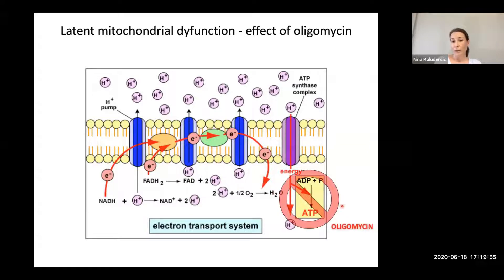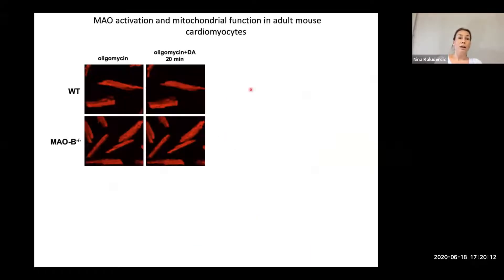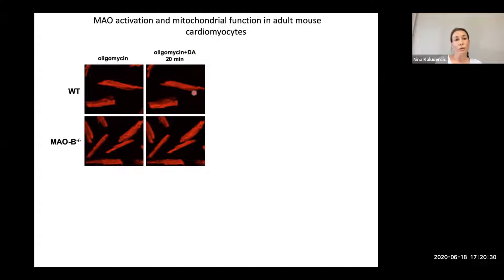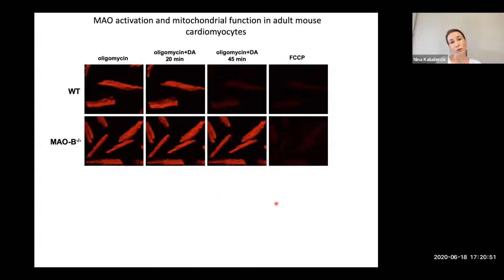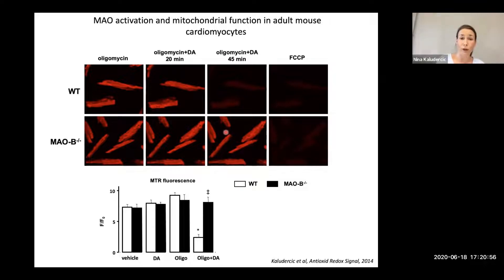We returned to our experiments using wild type and MAOB knockout adult cardiac myocytes loaded with TMRM. Dopamine alone produced no change, oligomycin alone produced no change, but a combination of dopamine and oligomycin caused individual mitochondria to start depolarizing in wild type cells after 20 minutes. After 45 minutes, the loss of mitochondrial membrane potential was complete in wild type cells, but this did not happen in MAOB knockout cells. FCCP was added at the end to confirm the fluorescence was due to mitochondrial membrane potential.